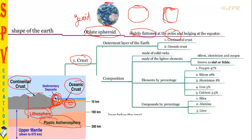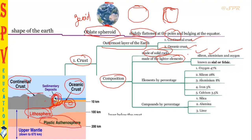The crust is the outermost layer of the Earth. It has two types: continental crust and ocean crust. The continental crust is mostly made of solid rocks and lighter elements like silicon, aluminium, and oxygen. Because of silicon and aluminium, it is called 'Sial' or by the other name 'felsic' — both indicate the crust. Now, in terms of percentage of elements present in the crust, oxygen has the highest percentage.